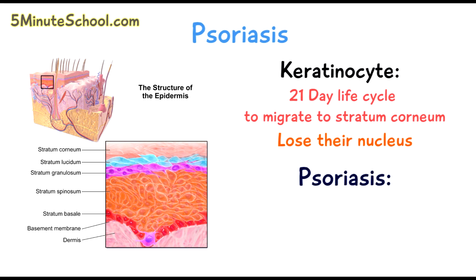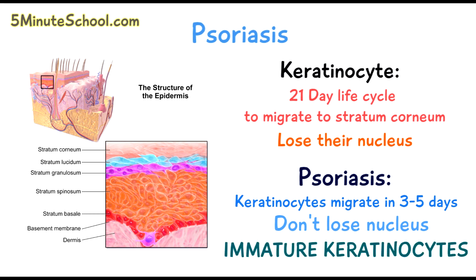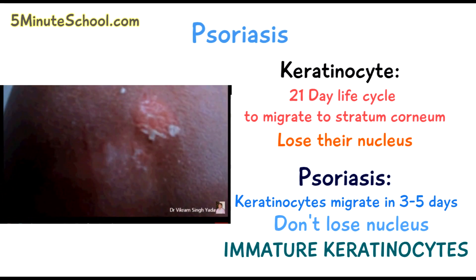In cases of psoriasis, this process of migration of keratinocytes — which make keratin, by the way — to the surface only takes 3 to 5 days, and they don't lose their nucleus. So these keratinocytes, which are making keratin, an important component of skin, are immature and you can just scrape them off the skin surface. This is known as the Auspitz sign.